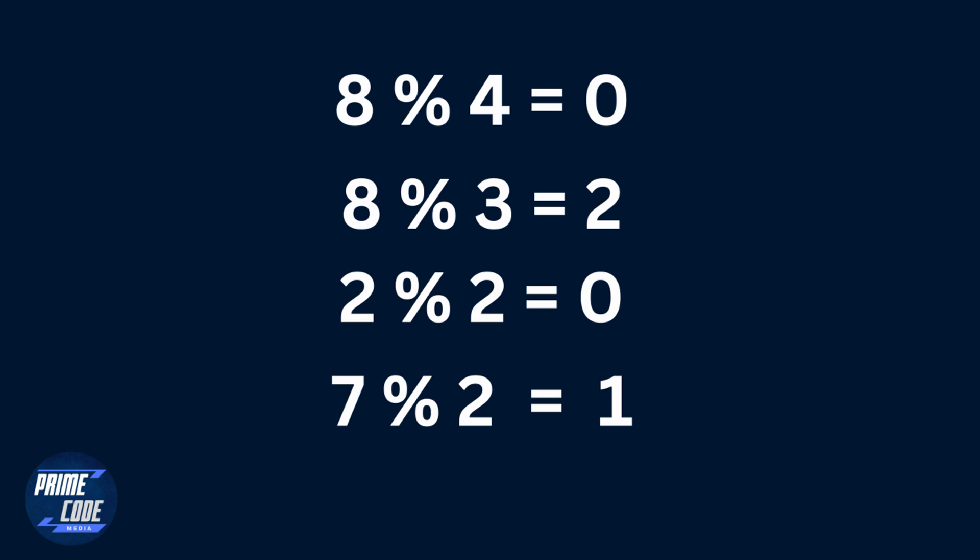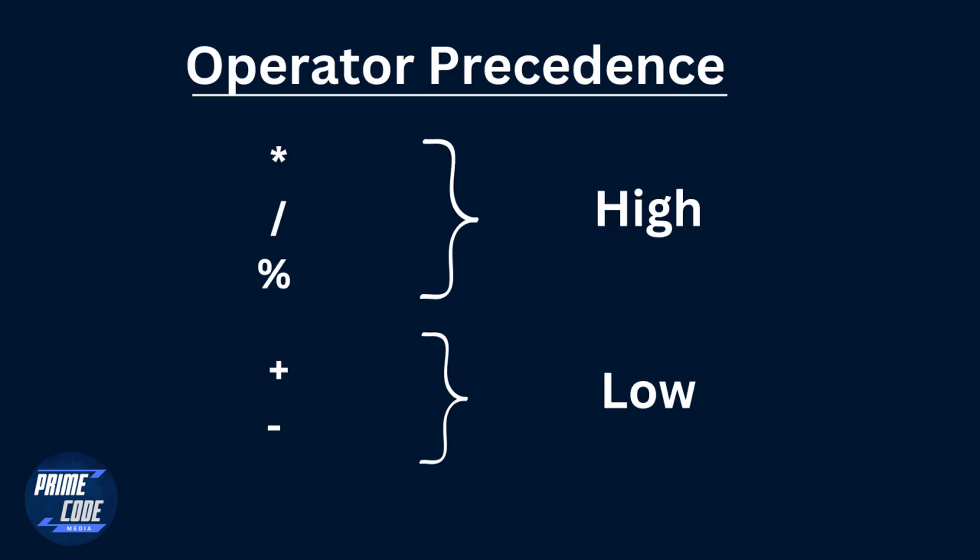There are many other situations where knowing the remainder of a division will be useful. I discuss those in separate later episodes of this series. Now in arithmetic there is also what is called operator precedence, and this is very important because it describes the order in which operations are performed in an arithmetic expression.